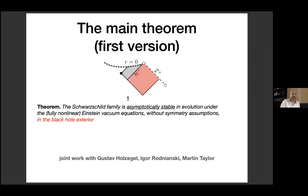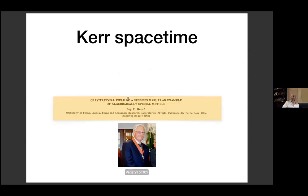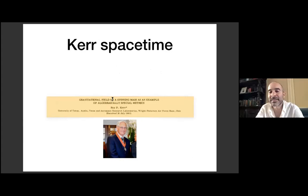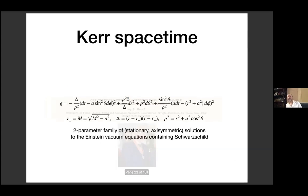This statement as stated cannot be true — it is true modulo the Kerr family. Roy Kerr, very deserving of all the medals he's wearing, discovered in 1963 a two-parameter family of stationary, axisymmetric metrics solving the Einstein vacuum equations, including Schwarzschild. The parameters are m — already present in Schwarzschild — and an additional parameter a, where a equals zero corresponds to Schwarzschild.